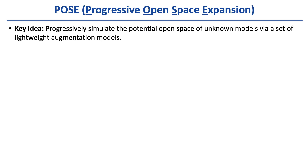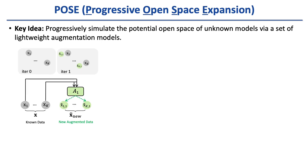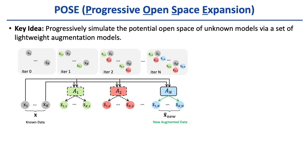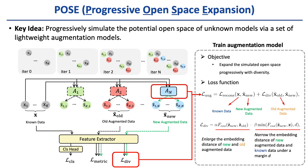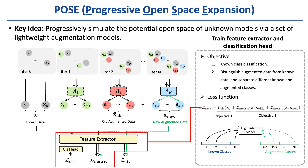Our solution is to progressively simulate the potential open space of unknown models with a set of lightweight augmentation models. For training a new augmentation model, the objective is to expand the simulated open space with diversity. For training the feature extractor and classification head, the objectives are two aspects: the first is known-class classification, and the second is to distinguish augmented data from known data and separate different known and augmented classes.